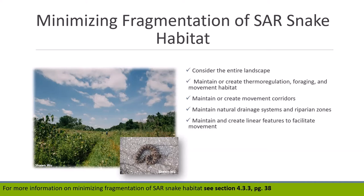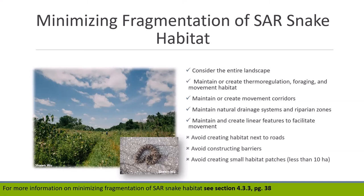Maintain any natural drainage systems that facilitate SAR snake movement, such as ditches and their associated riparian zones. If the landscape is highly developed, maintain or create linear features that can facilitate movement such as hedgerows. Avoid creating habitat near roads, as this can result in road mortality. Avoid creating barriers such as solid fencing and retaining walls that prevent snake movement — if these features are necessary, modify them to allow snake passage, such as a fence 30 centimeters off the ground. Also avoid creating small habitat patches less than 10 hectares, as snake abundance and diversity is greater in larger habitats.